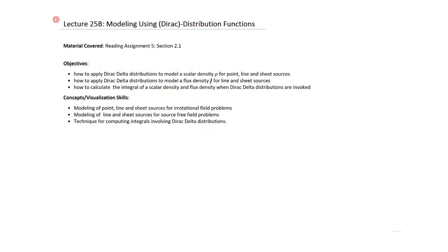The objectives are to figure out how we can apply the Dirac delta distributions to model a scalar density rho for point, line, and sheet sources; how to apply Dirac delta distributions to model a flux density J for line and sheet sources; and how to calculate the integral of a scalar density and flux density when Dirac delta distributions are invoked.